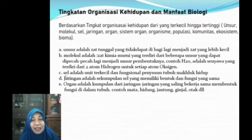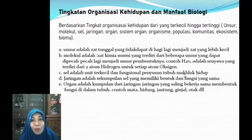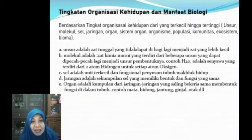Yang ketiga adalah sel. Semua makhluk hidup memiliki sel; tidak bisa dikatakan makhluk hidup bila tidak mempunyai sel. Pengertian sel adalah unit terkecil dan fungsional penyusun tubuh makhluk hidup. Tingkatan berikutnya setelah sel adalah jaringan. Jaringan adalah sekumpulan sel yang memiliki bentuk dan fungsi yang sama.